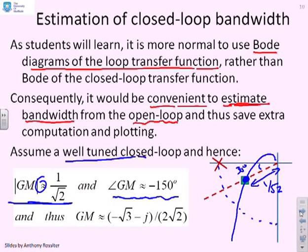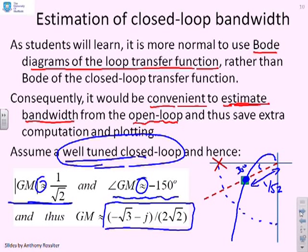We're saying typically you'll have the modulus of GM about 1 over root 2, the argument of GM about minus 150. Please note we have used approximate, we're not trying to say exact. Therefore, as a complex number, this is what GM will be: minus root 3 minus j all divided by 2 root 2. This is for a typically well-tuned closed-loop because you will always have the Nyquist diagram approaching the origin within this particular quadrant and hopefully well away from the minus 1 point. The minus 1 point was marked here with this cross.